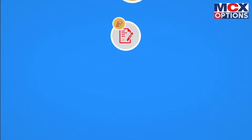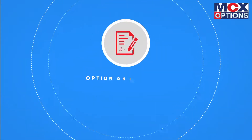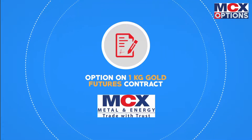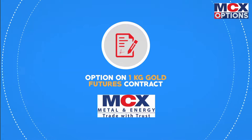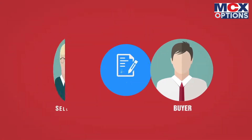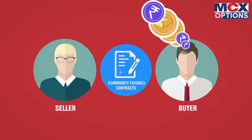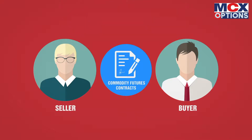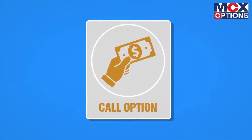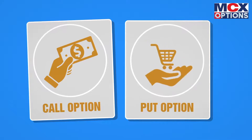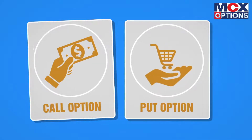With the introduction of options on a 1kg gold futures contract at MCX, one can use options to get the right but no obligation to buy or sell the underlying gold futures contract for a specific price at expiry. A call option gives the holder the right to buy, whilst a put gives the right to sell.